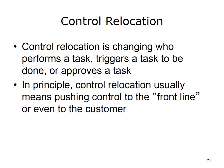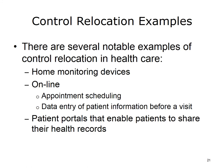Control, or work relocation, is changing the person who performs a task, triggers a task to be done, or approves a task. In principle, control relocation usually means pushing control to the front line — empowering those closest to the customer to make more decisions, or even pushing control to the customer. Notable examples in healthcare include home monitoring devices, such as patients taking their blood pressure daily and entering it into a website or using a device to transmit data to their provider, online appointment scheduling, online data entry of patient information before a visit, and patient portals that enable patients to share their health records with other providers.